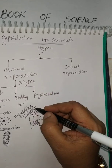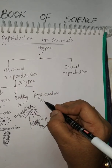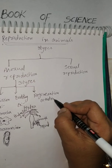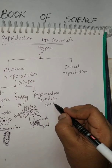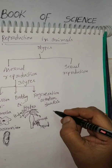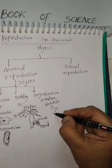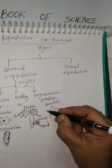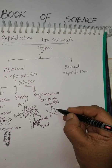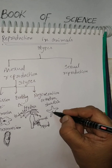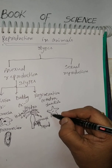Regeneration examples: Hydra and Starfish. Starfish looks just like this — it has a star shape.